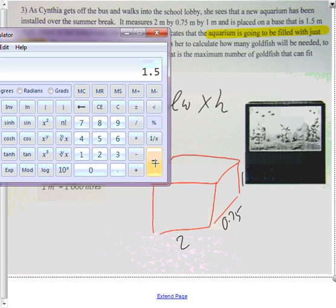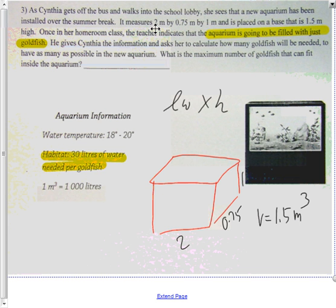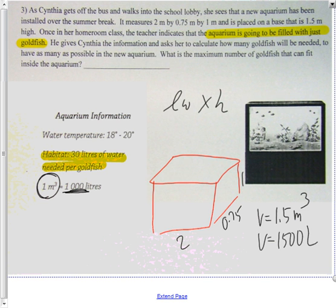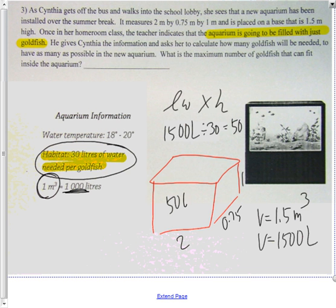2 times 0.75 times 1 gives 1.5 cubic meters of volume. One cubic meter is 1000 liters, so the volume is 1500 liters. You need 30 liters per goldfish, so 1500 divided by 30 tells me I can have 50 goldfish in this aquarium. 83% got that, very well done.